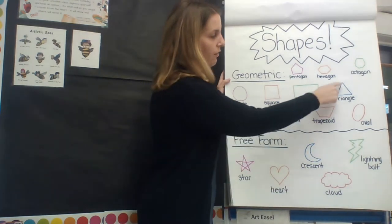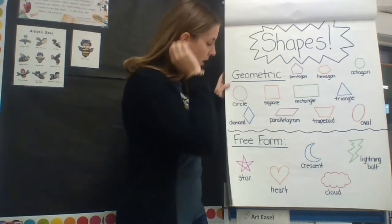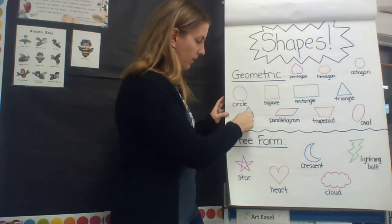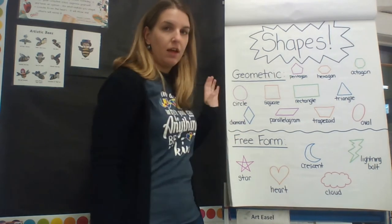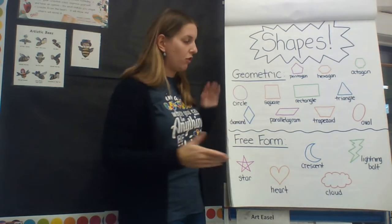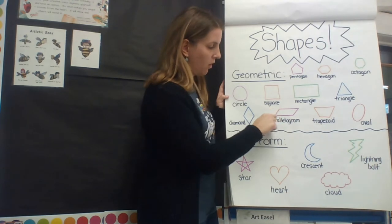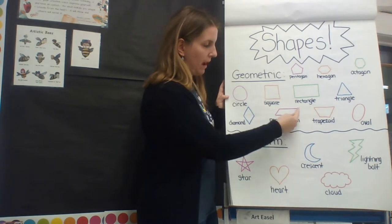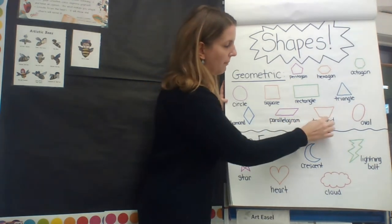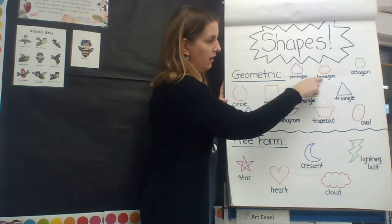Three lines can make a triangle. Four lines tilted could also make a diagonal shape. And there are tons of other types of shapes — parallelograms, where all the lines are parallel or run next to each other, and a trapezoid.